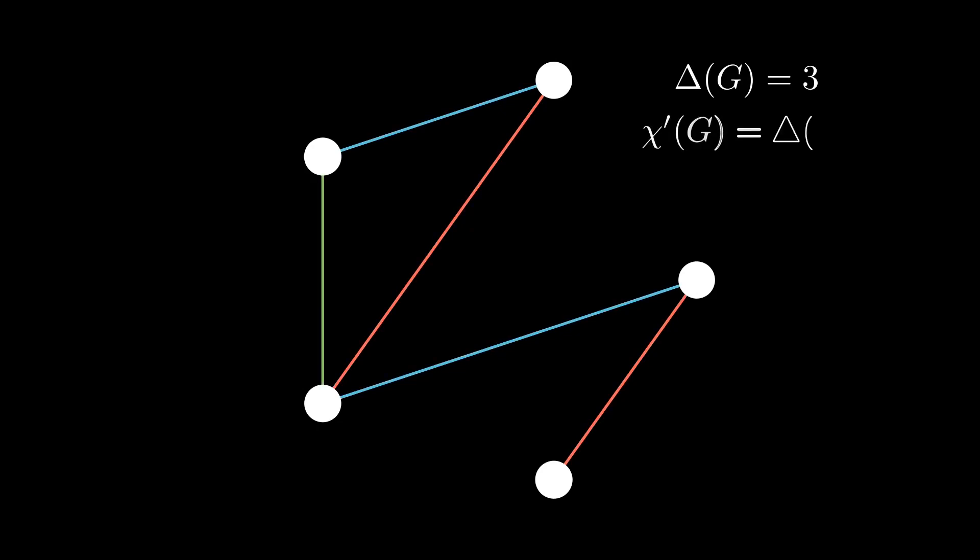Let's look at an example graph. We can use three colors to color its edges, which also happens to be its maximum degree. However, adding additional two edges like so doesn't change the maximum degree, but increases the number of colors needed by one.